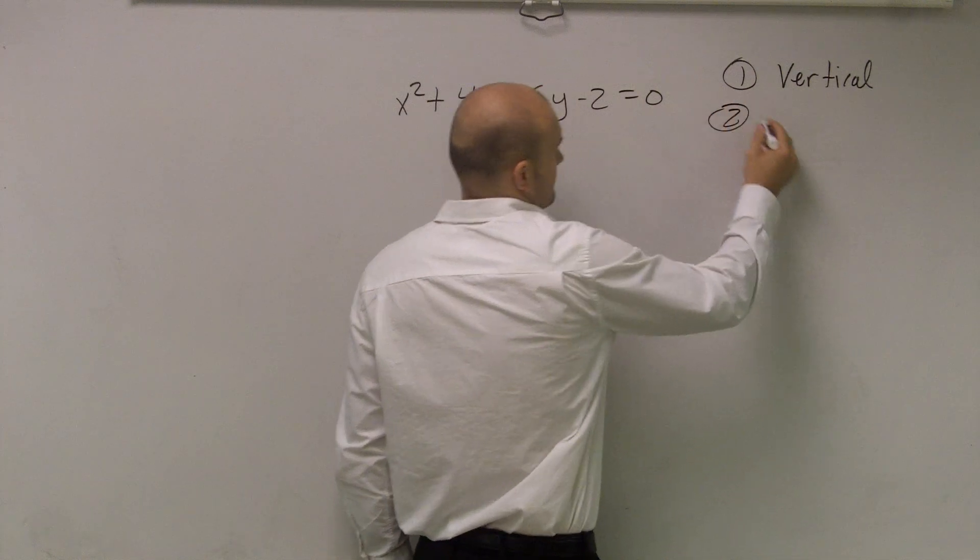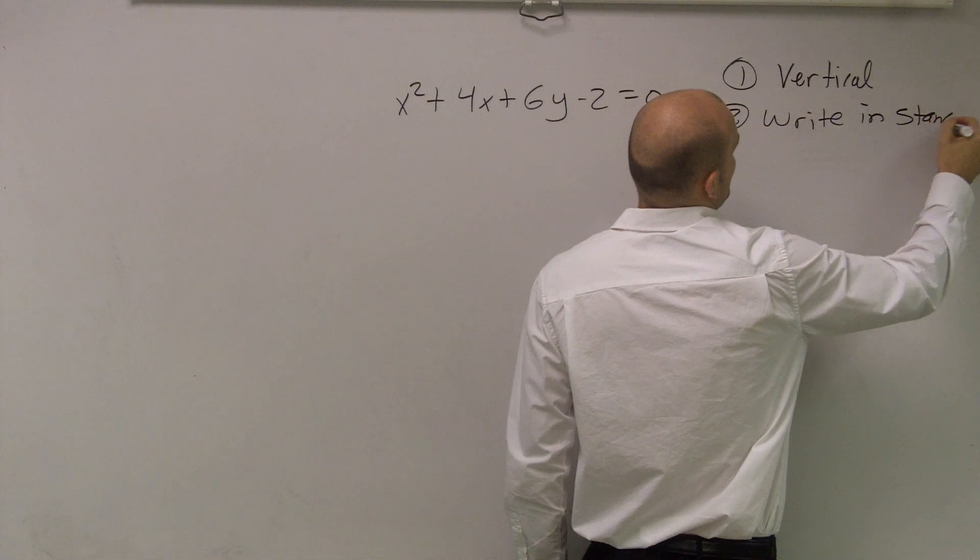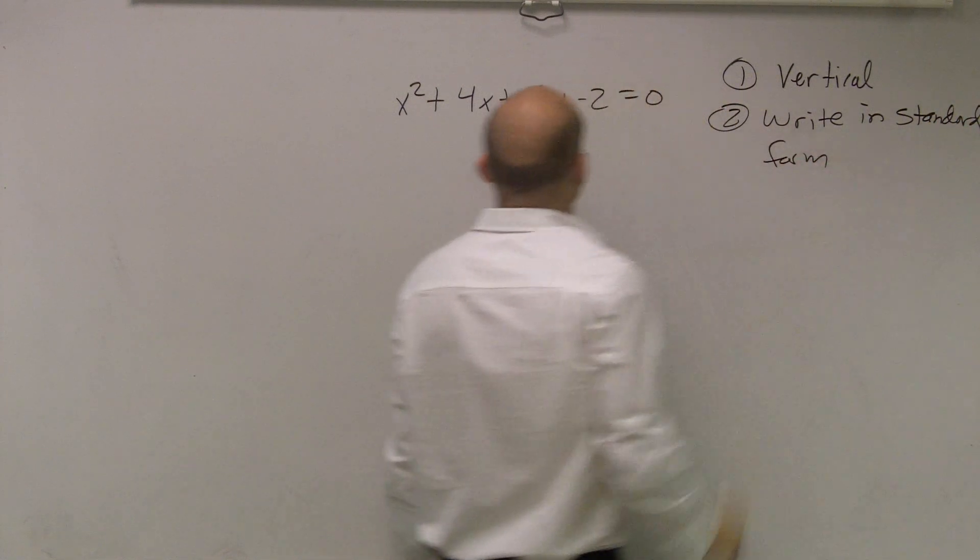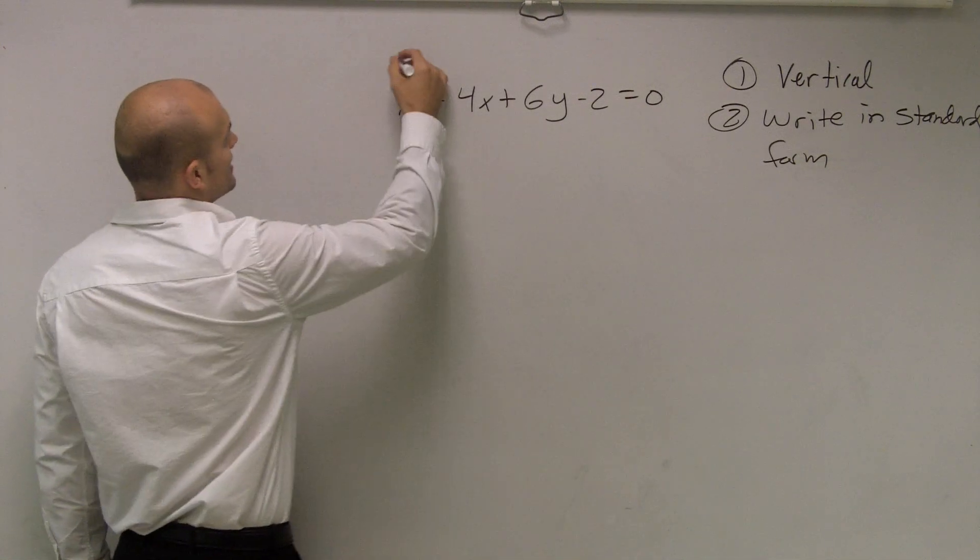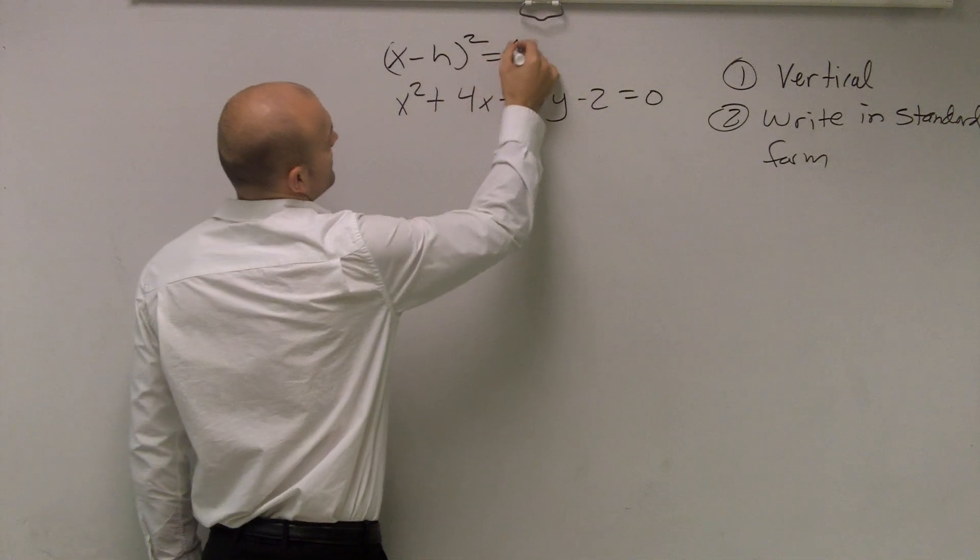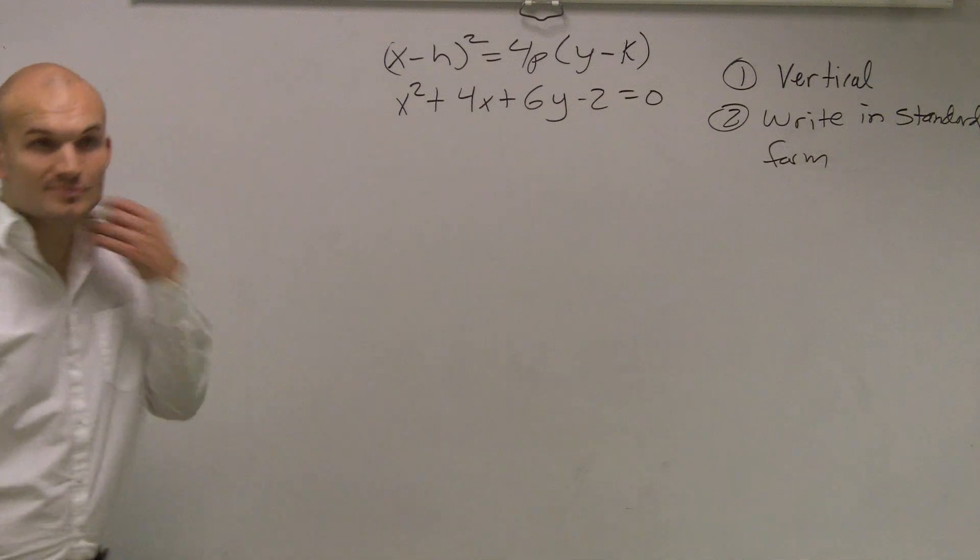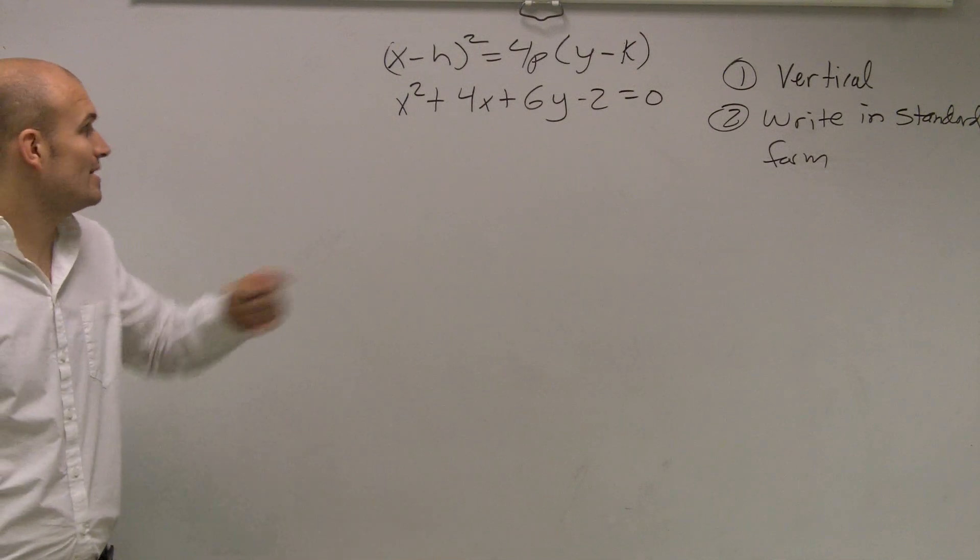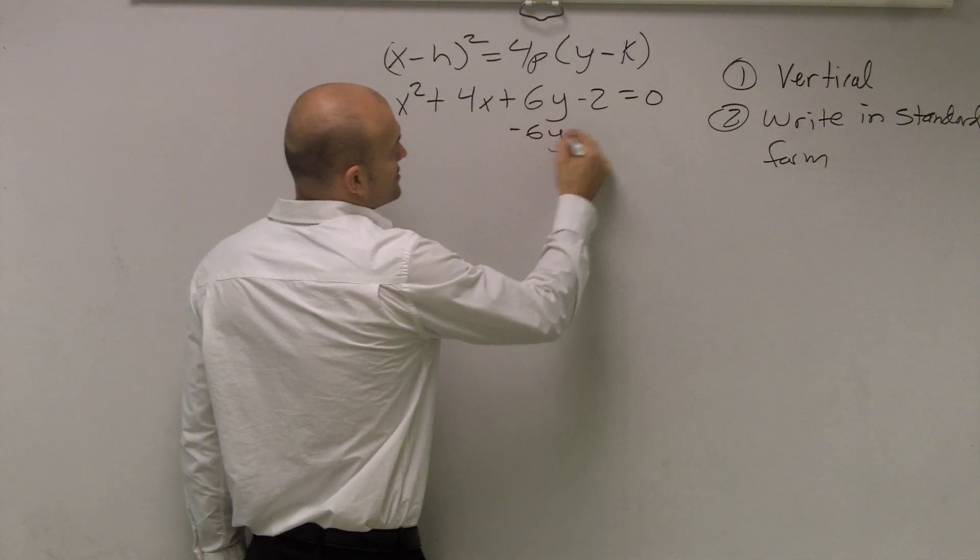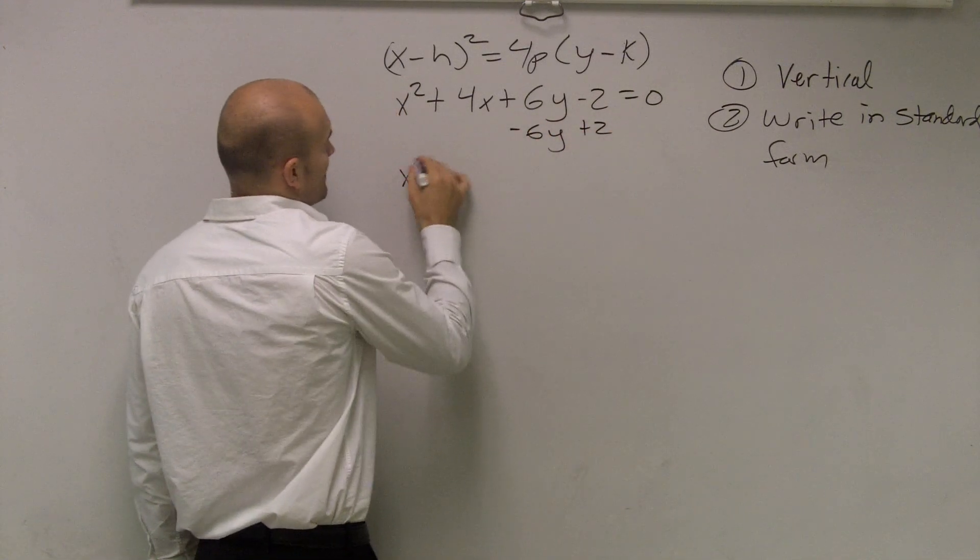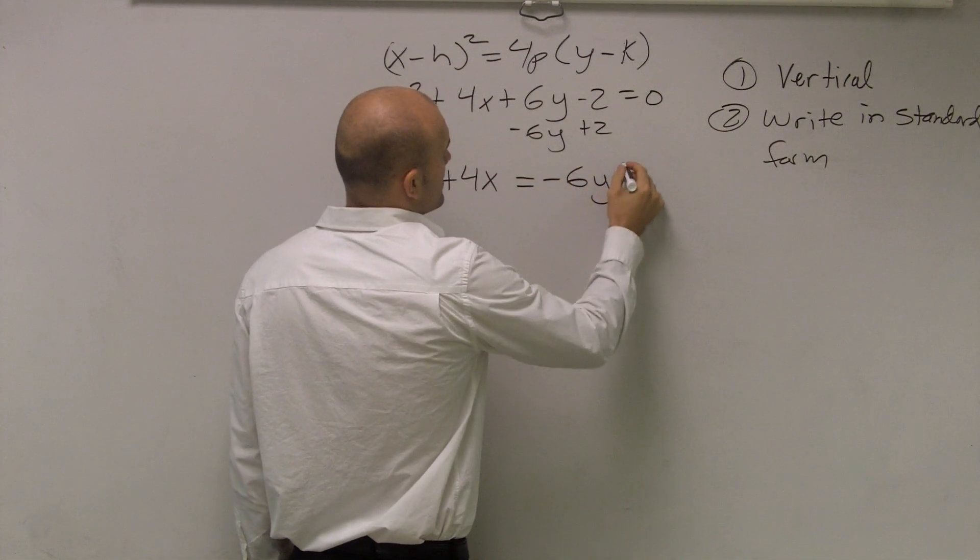The next thing is I need to write it in standard form. So I take a look at this, x squared plus 4x plus 6y minus 2 equals 0. Does that look anything like our standard form? No, it doesn't. So what I'm going to do is subtract the 6y and the positive 2. So I have x squared plus 4x equals negative 6y plus 2.